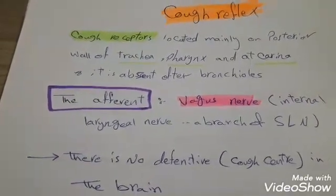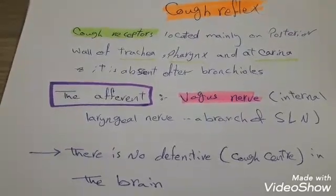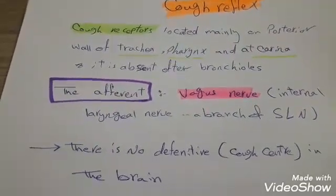Cough Reflex: Cough receptors are located mainly on the posterior wall of the trachea, pharynx, and at the carina. They are absent beyond the bronchioles.